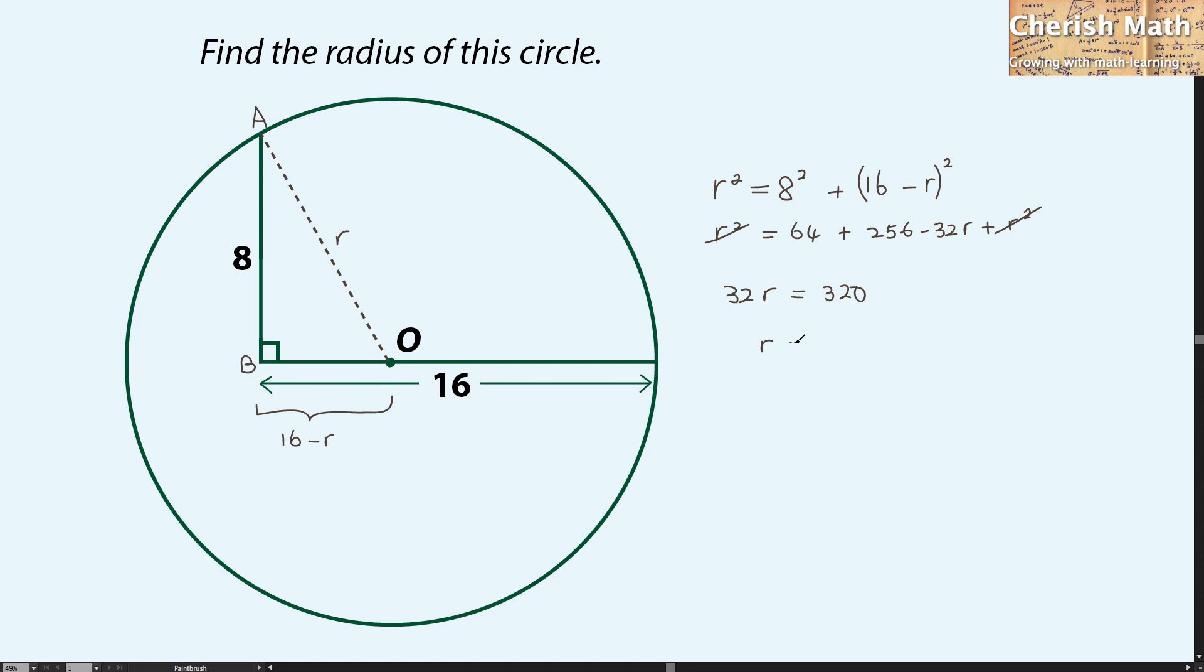R is 320 divided by 32. The answer is 10. And we solved the puzzle here. Thanks for watching.